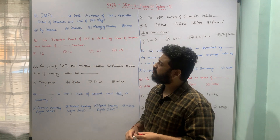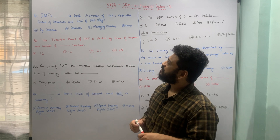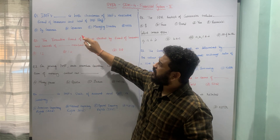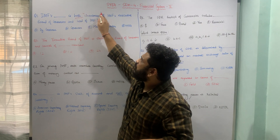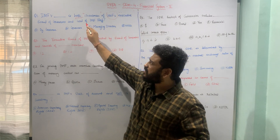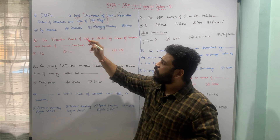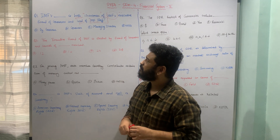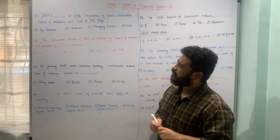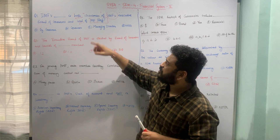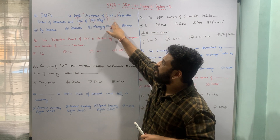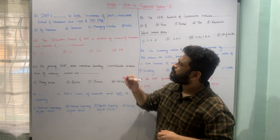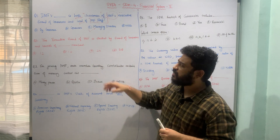The first question: who is both Chairman of IMF's Executive Board of Governors and Head of IMF's Staff? The options are: A) Deputy Governor of IMF, B) Governor of IMF, C) Managing Director of IMF, or D) None of the above. The correct answer is C — the Managing Director of IMF is both the Chairman of IMF's Executive Board of Governors and Head of IMF's Staff.